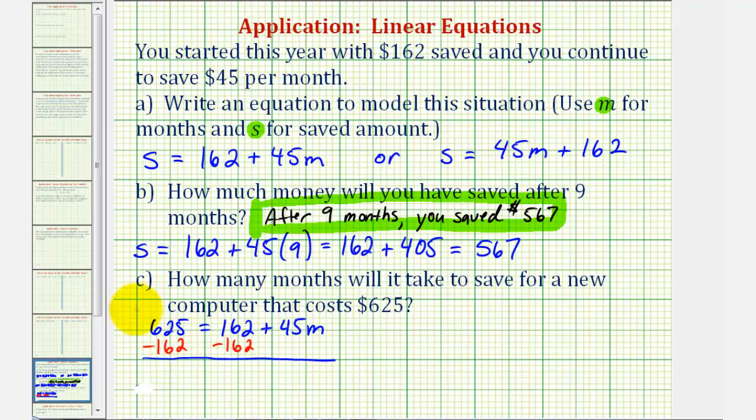This difference here is 463. This would be zero, so we have 463 equals 45M. The last step to solve for M, we would divide both sides by 45. Which means M is equal to 463 divided by 45.